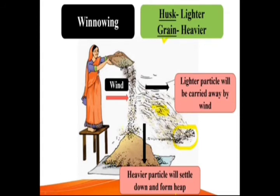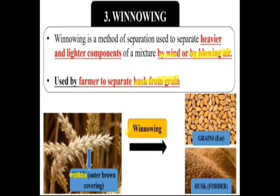You might have seen this process from your home — your mother does it with rice and other grains. Winnowing is a method of separation used to separate heavier and lighter components of a mixture by wind or by blowing air, and it is used by farmers to separate husk from grains.